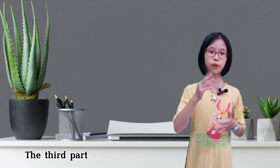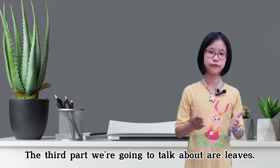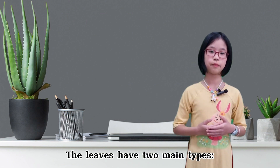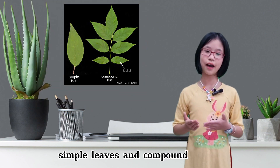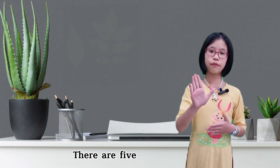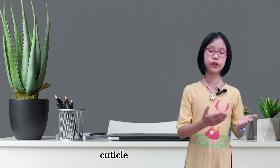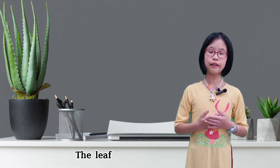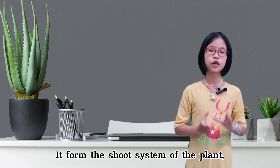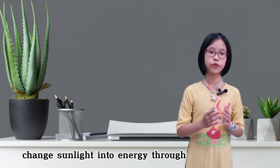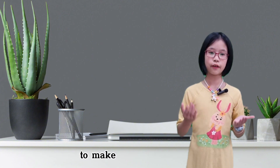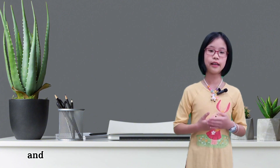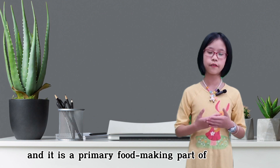The third part we're going to talk about are leaves. Leaves have two main types: simple leaves and compound leaves. There are five parts in a leaf: cuticle, epidermis, stomata, palisade layer, and vein. The leaf has three functions: it supports the structure of the plant, gains sunlight and converts it into energy through photosynthesis to make food for the plant, and it is the primary food-making part of the plant.